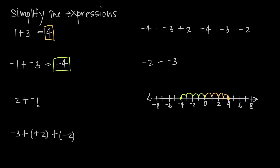If we have positive 2 plus negative 1, we start at the origin and move to the right 2 units in the positive direction, then add a negative 1, which means we go back to the left 1 unit, and we end up at positive 1. This makes sense because adding a negative number is just like subtracting — positive 2 plus negative 1 is the same as 2 minus 1, and both give us positive 1.